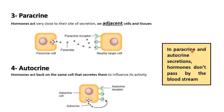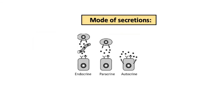In paracrine and autocrine secretions, the hormones do not pass through the bloodstream, since they act either on the cell itself as in autocrine secretion, or on adjacent cells and tissues as in paracrine secretion. In conclusion, we have an endocrine mode of secretion, a paracrine mode, an autocrine mode, and also exocrine secretions.